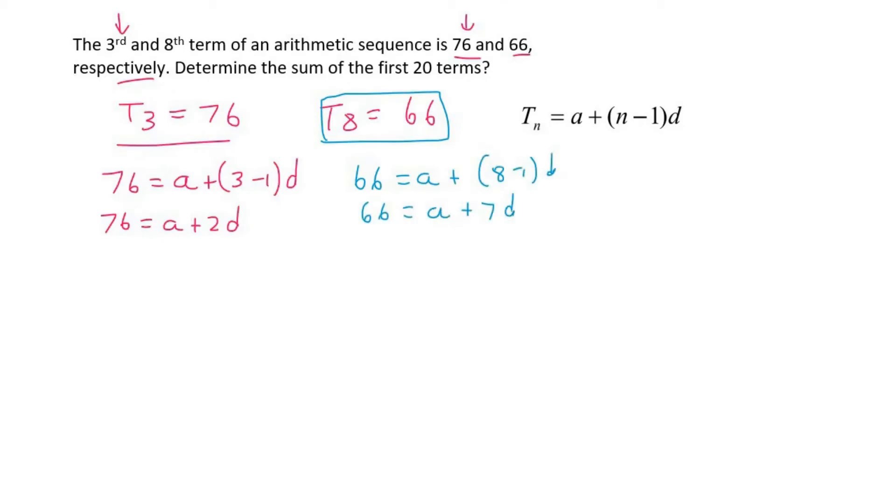Now we solve these simultaneously. I'm going to get this one by itself. So A equals 76 minus 2D. And I'm going to plug that A over here. So 66 equals 76 minus 2D plus 7D.